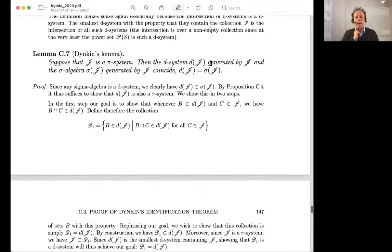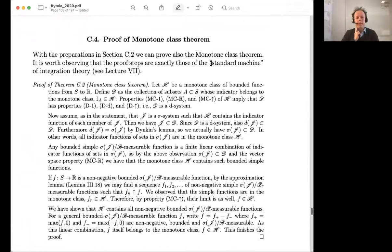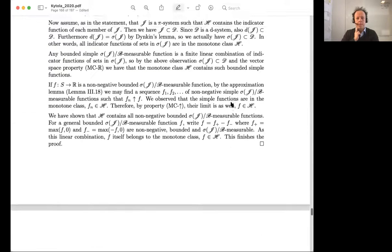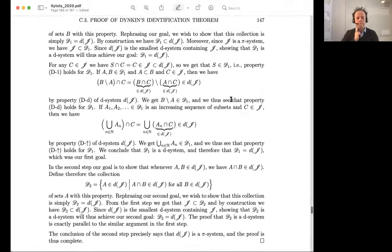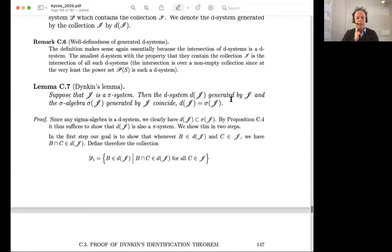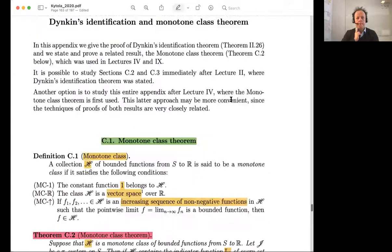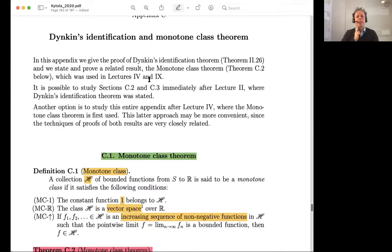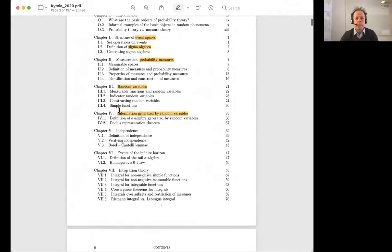With this monotone class theorem, that's the key to proving this representation theorem. The representation theorem is there, the monotone class theorem is there, and with that we can prove Doob's theorem. Here is the proof of the non-trivial part.